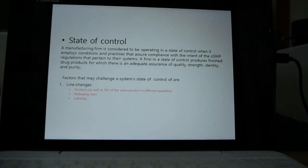State of control. What is state of control? That means a manufacturing firm is considered to be operating in a state of control when it applies conditions and practices that assure compliance with the intent of the CGMP regulations that apply to their systems. A firm in a state of control produces finished drug products for which there is adequate assurance of quality, strength, identity, and purity.